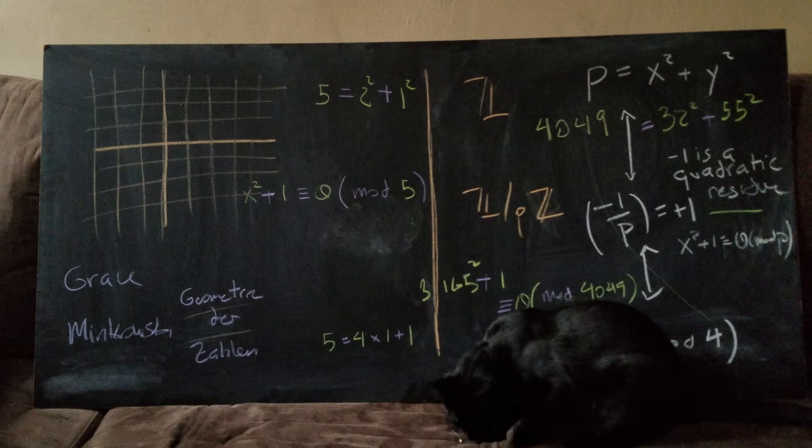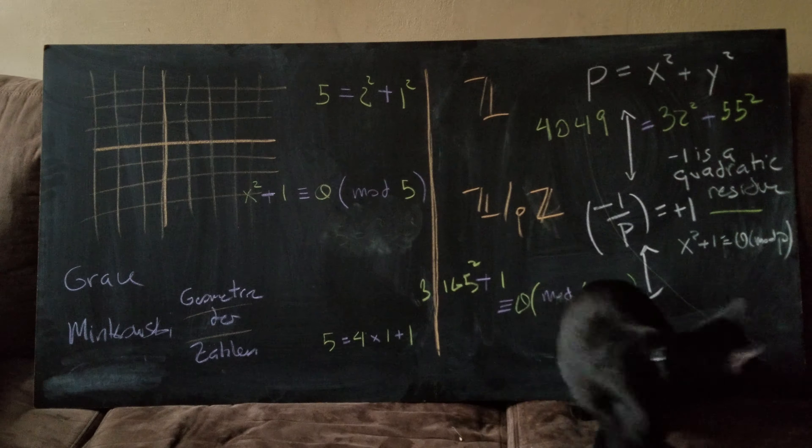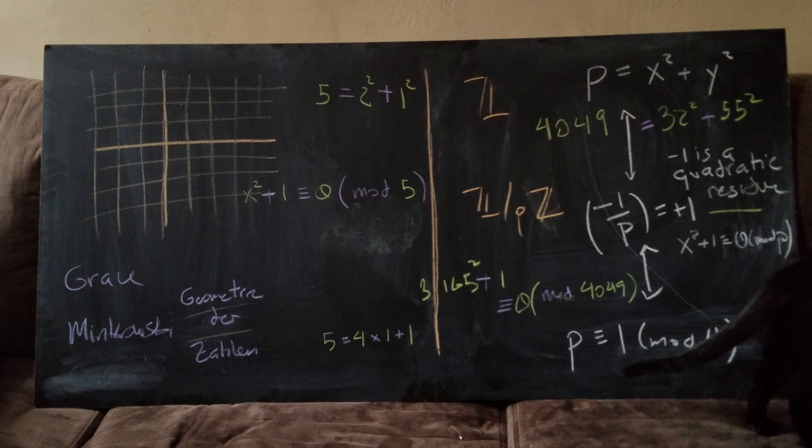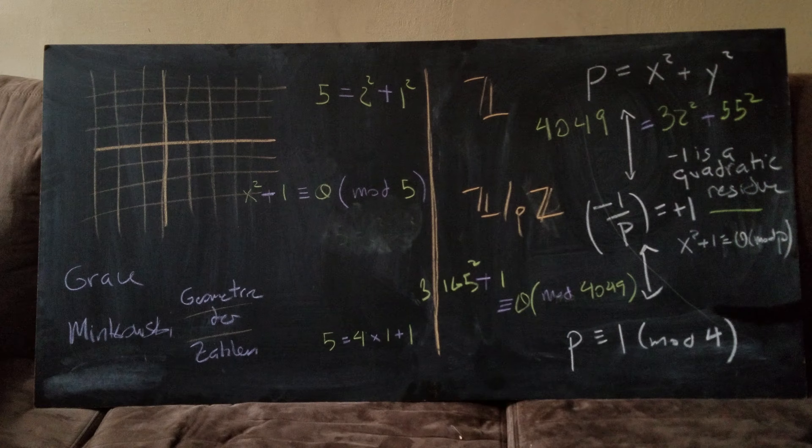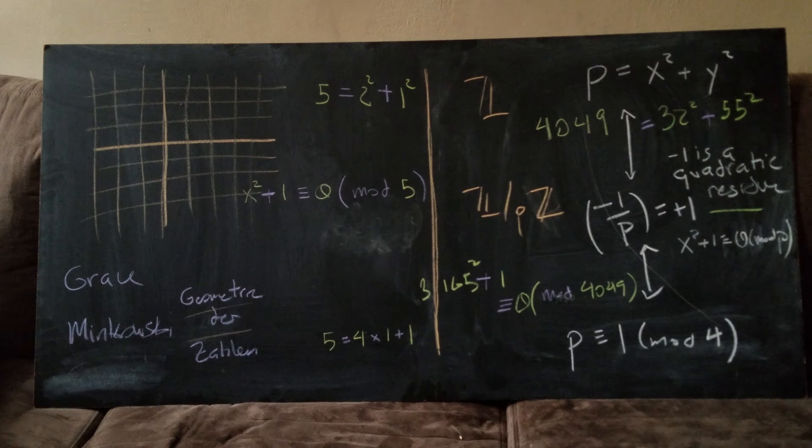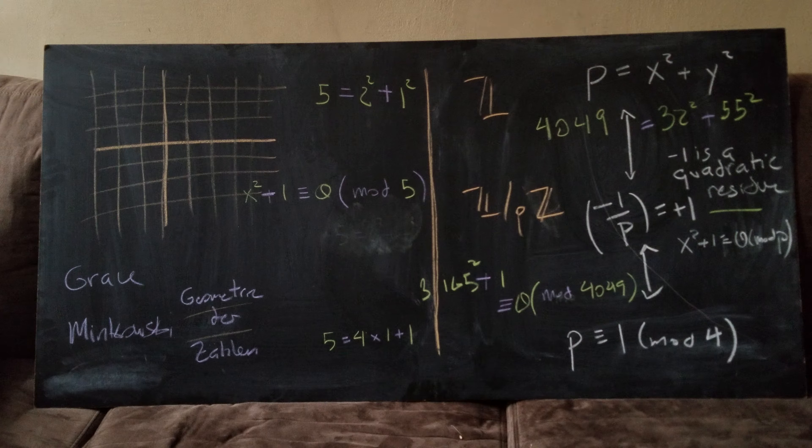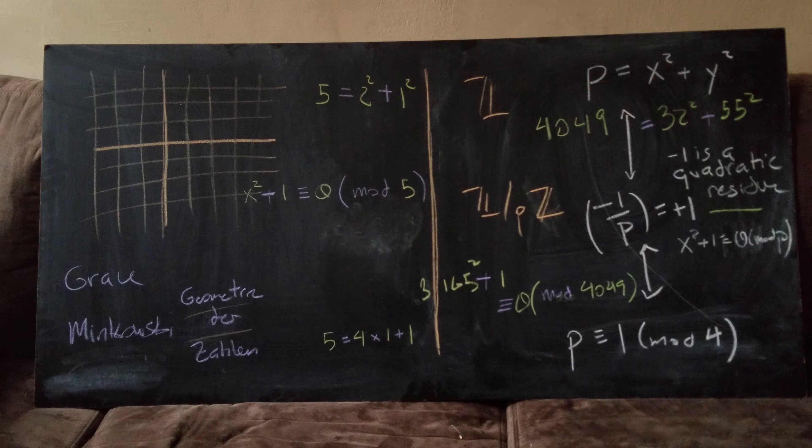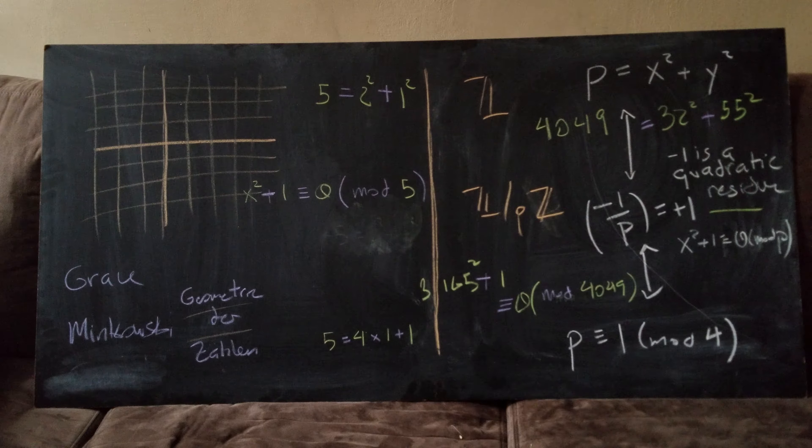So for now let's just stick to five. Five is four times one plus one so five is a prime. X squared plus one is zero mod five. Let's see, two will work, x equals two will work. I don't say it on the board. And five is two squared plus one squared.